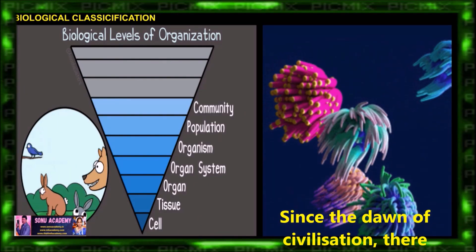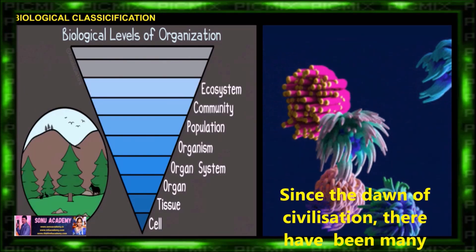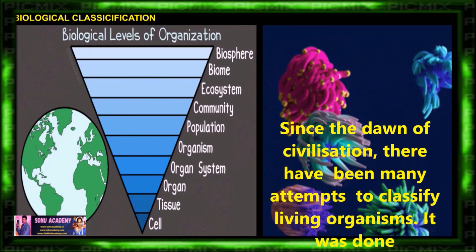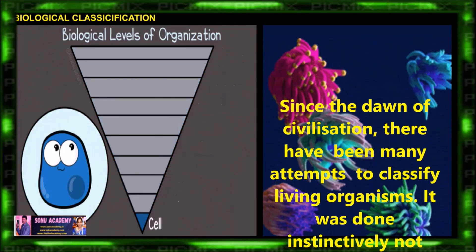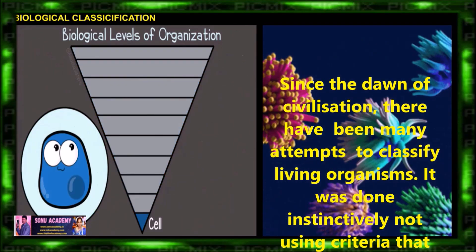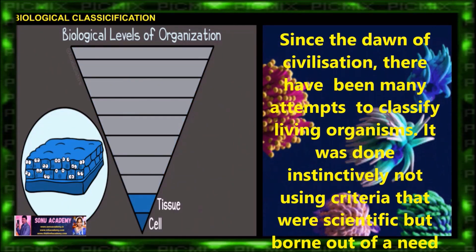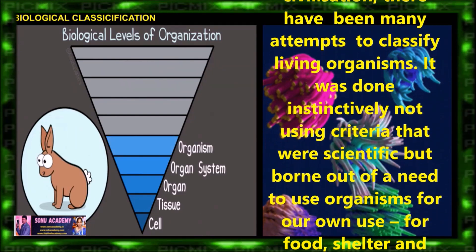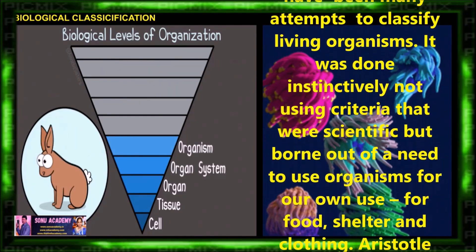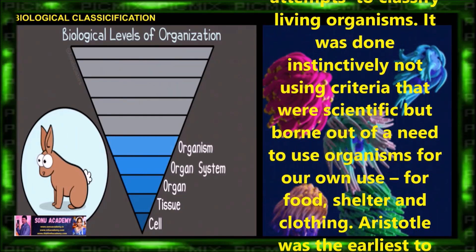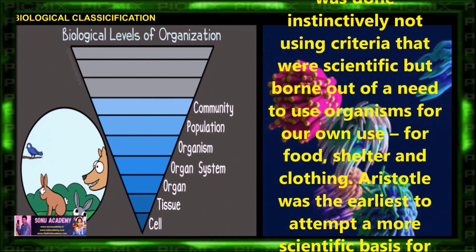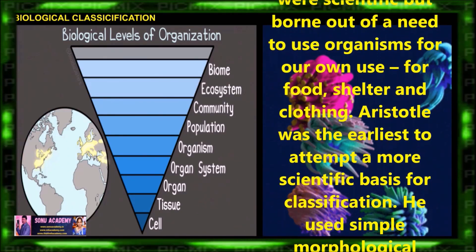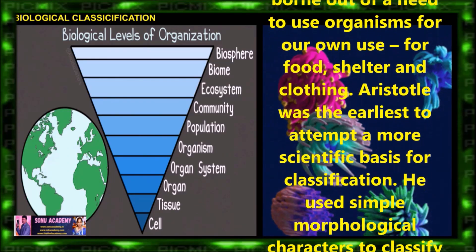Children, let us discuss the need of classification. Since the dawn of civilization, there have been many attempts to classify living organisms. It was done not using criteria that were scientific, but drawn out of a need to use organisms for our own use — for example, for food, shelter and clothing.